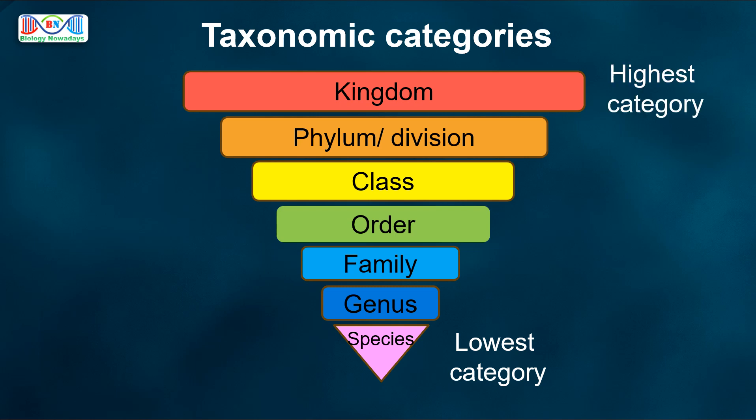To place an organism in various categories, the basic requirement is the knowledge of characters of an individual or group of organisms.